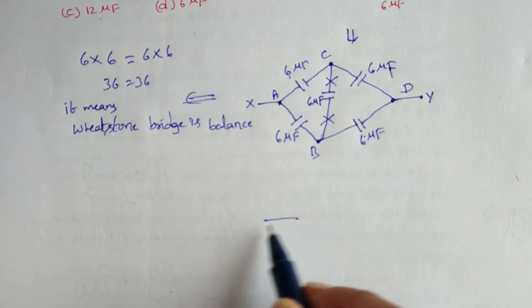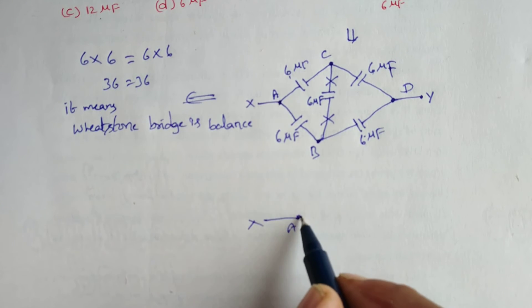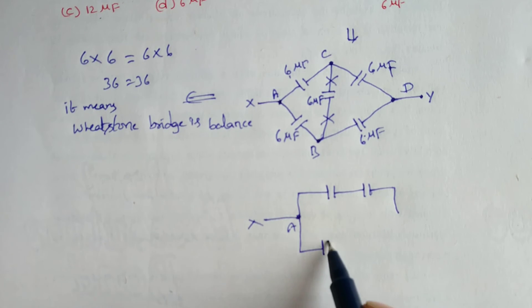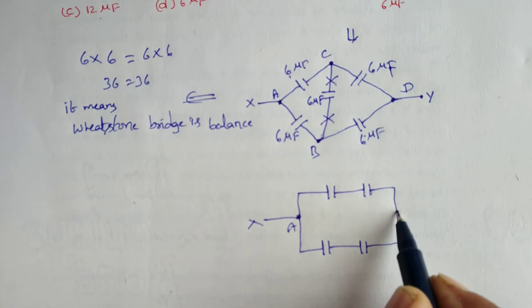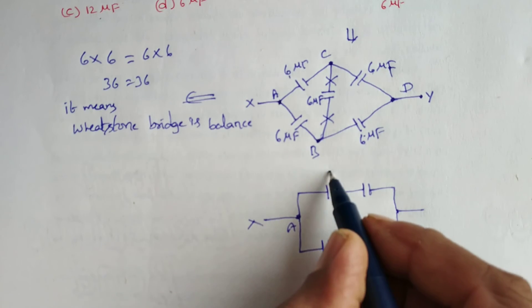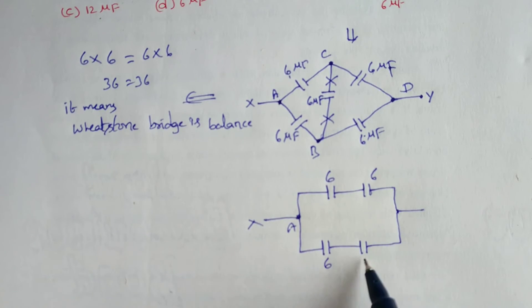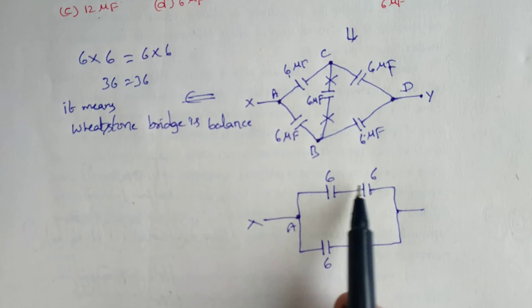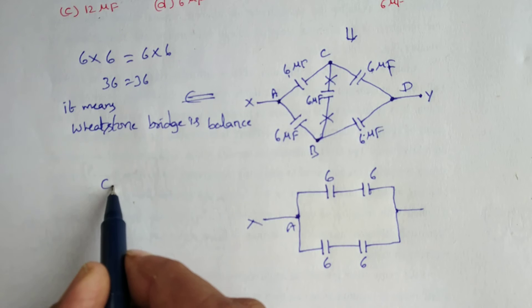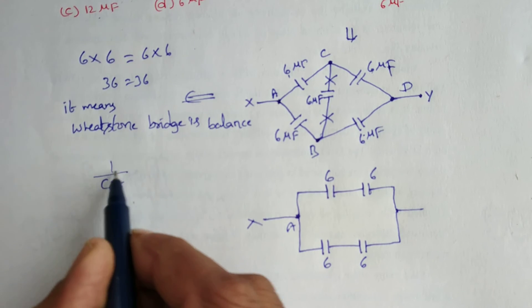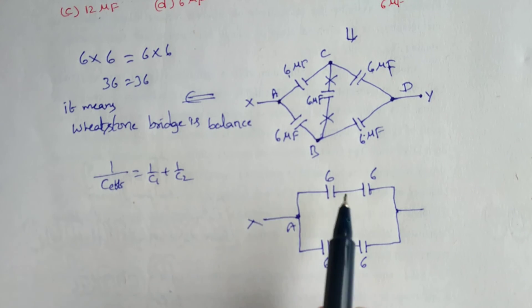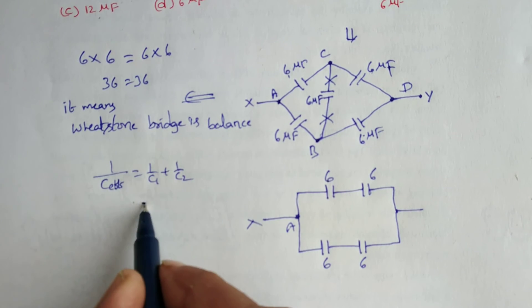This is X, this is Y. If the middle one is removed, the two capacitors are like this. This is 6, 6, 6, 6, all are microfarads. If the two resistors are in series, the effective resistance is 1 by C effective equals 1 by C1 plus 1 by C2.